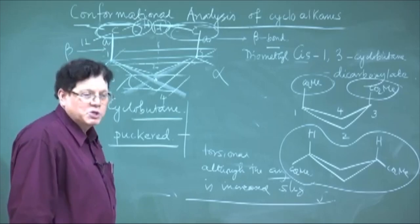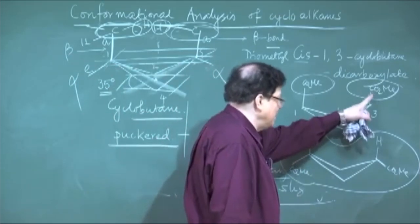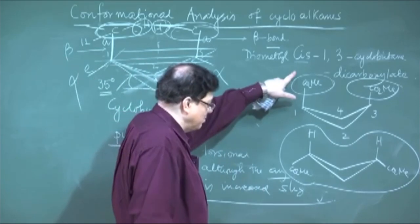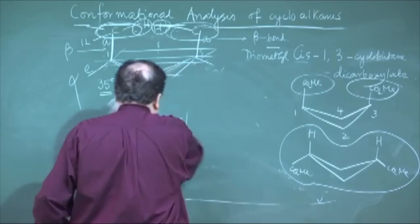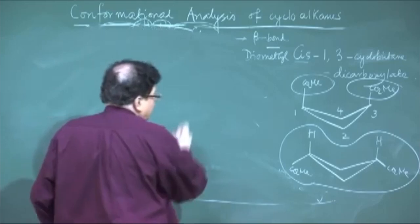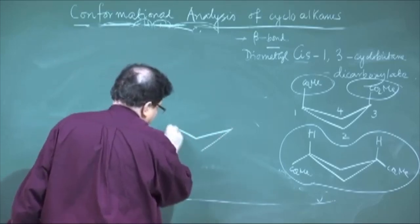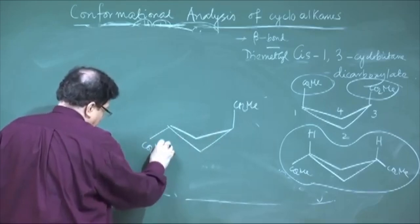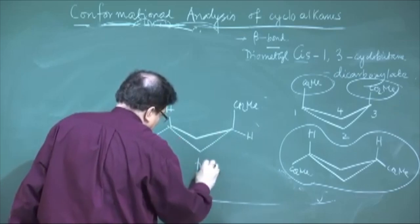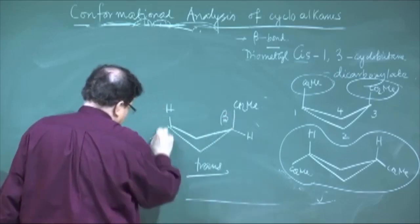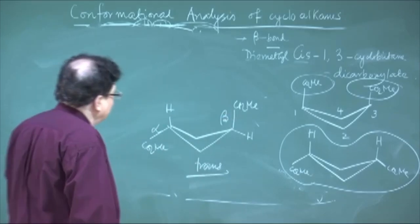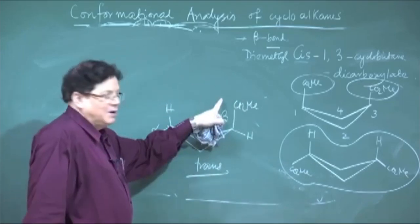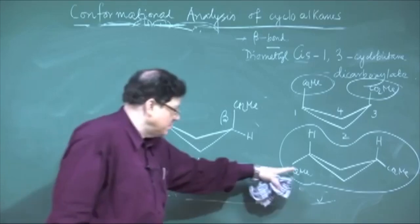In the case of the trans isomer, there is no option — one group has to be axial and the other has to be equatorial. So in the trans compound, one CO₂Me is beta and the other is alpha — one axial, one equatorial. Comparing stability: the trans compound, where one CO₂Me is axial and one is equatorial, is more stable than the cis compound where both would be axial. This is because having a large group in the axial position causes 1,3-diaxial interaction.